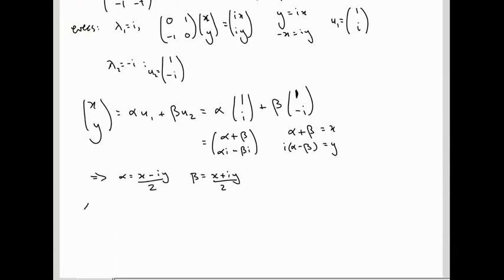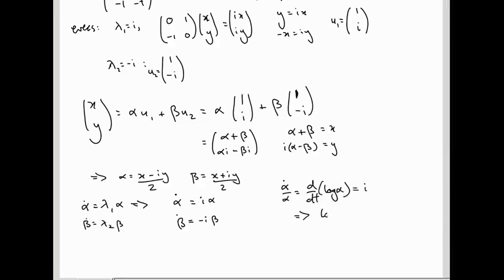So, our equation is now alpha dot equals lambda 1 alpha and beta dot equals lambda 2 beta. Well, lambda 1 is i so we get alpha dot equals i alpha and beta dot equals minus i beta. So, if you divide by alpha you get alpha dot over alpha which is d by dt of log alpha and that's supposed to be equal to i which tells you log alpha equals it plus a constant, which tells you alpha equals some constant times e to the it. The second equation is going to give you the same except with a minus i in the exponent. So, some constant times e to the minus it.